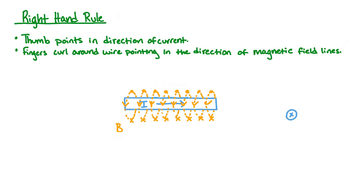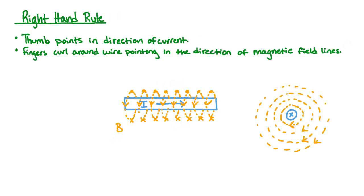If we were to look at our wire in a different direction, such that the current was pointing into our screen, applying our right-hand rule with our thumb being directed into the screen and our fingers curling around the wire, the magnetic fields make concentric circles that are clockwise around our current-carrying wire.